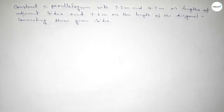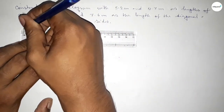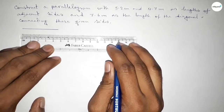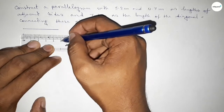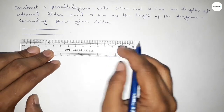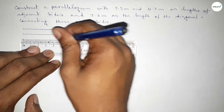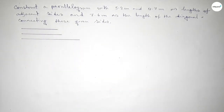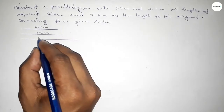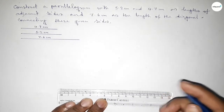First of all, drawing here three lines of given lengths. The first one is 4.7 centimeter, then drawing another line of length 5.2 centimeter, and last drawing a line of length 7.6 centimeter. So this one is 4.7, this one is 5.2 centimeter, and this one is 7.6 centimeter.